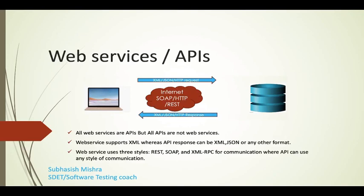Next, what is a web service? A web service is a collection of open protocols and standards used to communicate between two applications over a network. A web server running on a computer listens for requests from other computers. When a request is received over a network, the web server returns the requested resources — this resource could be JSON, XML, HTML files, images, or audio files.